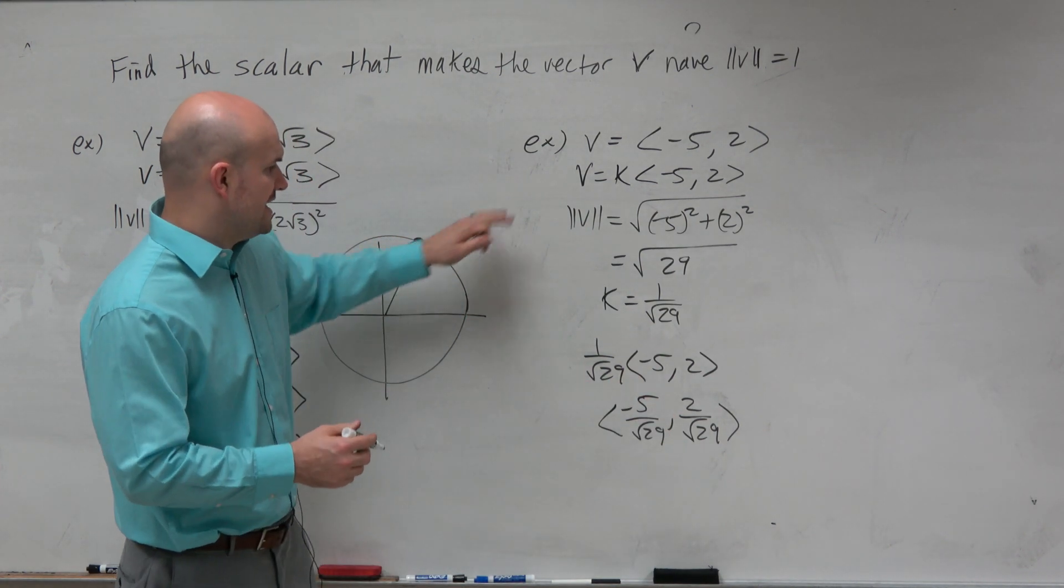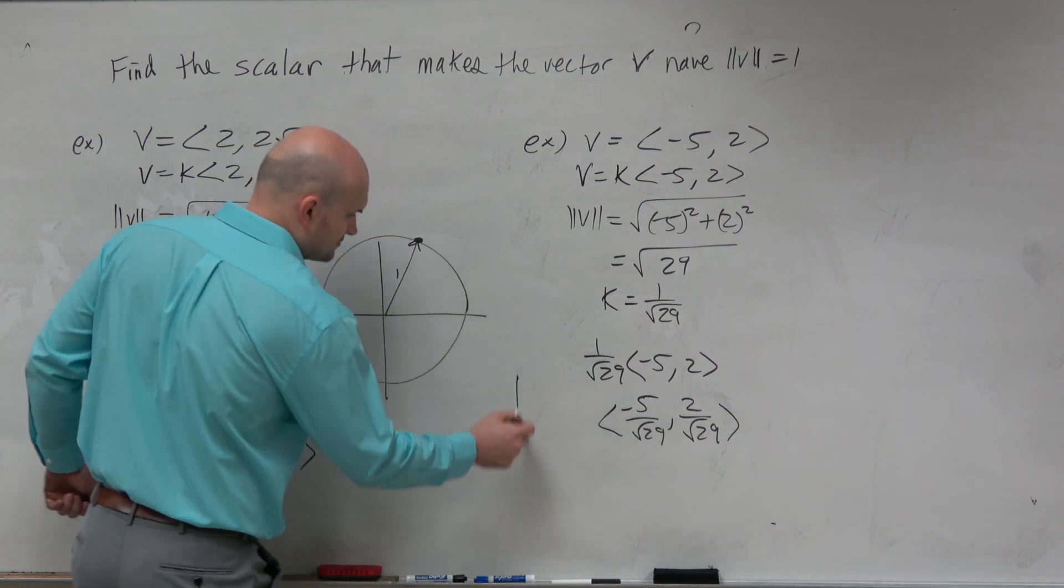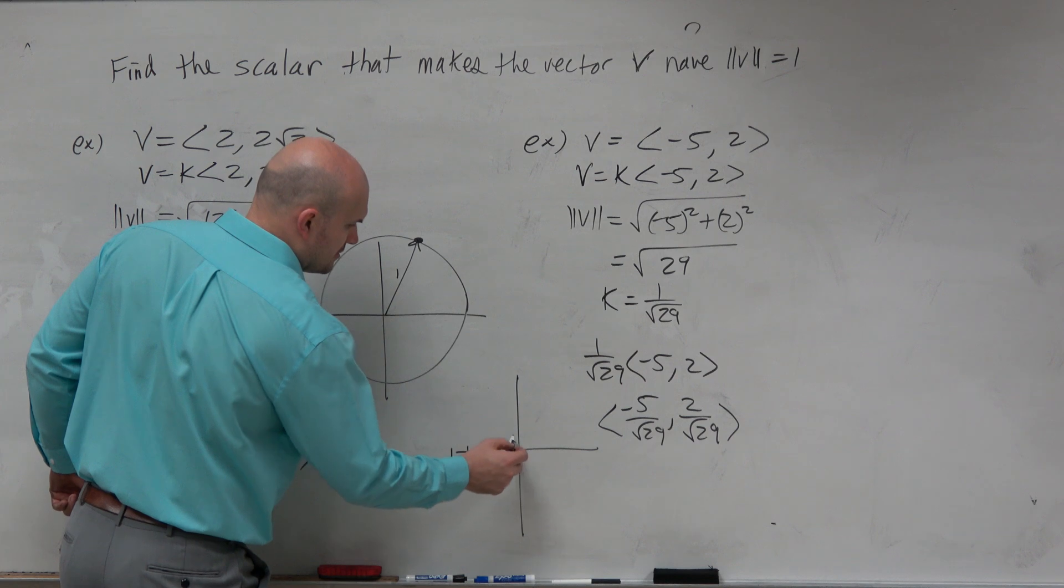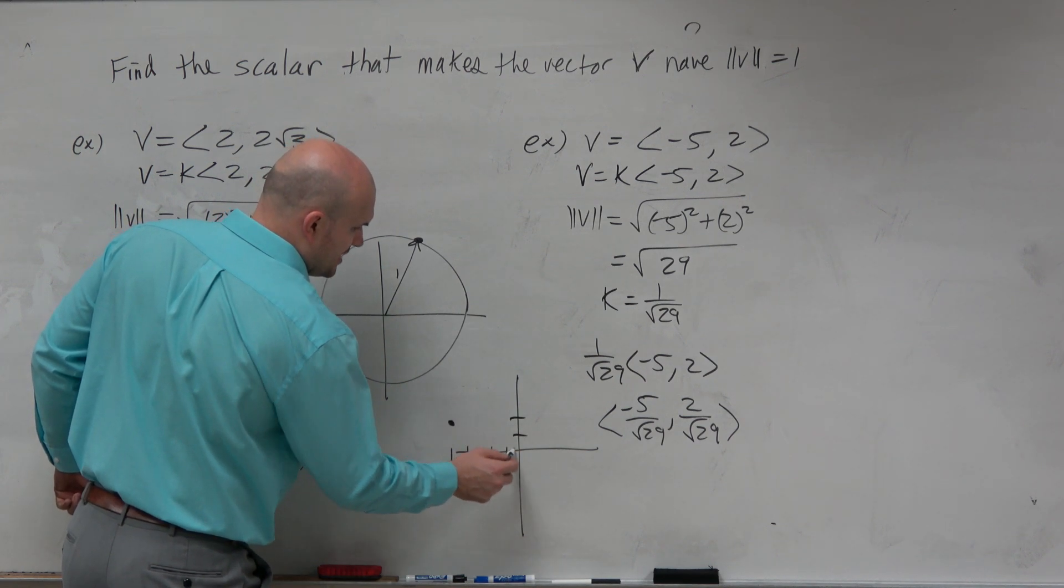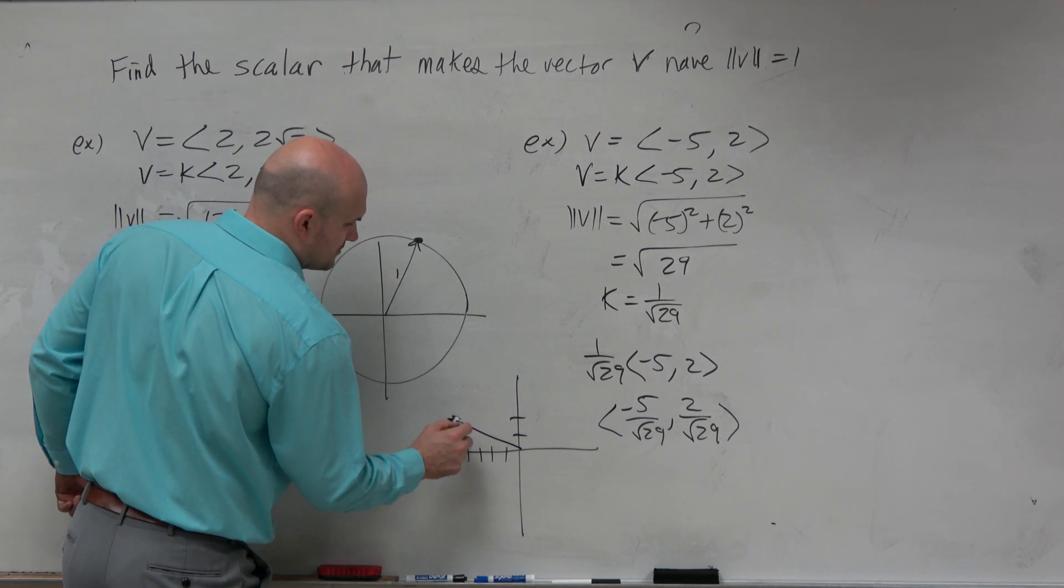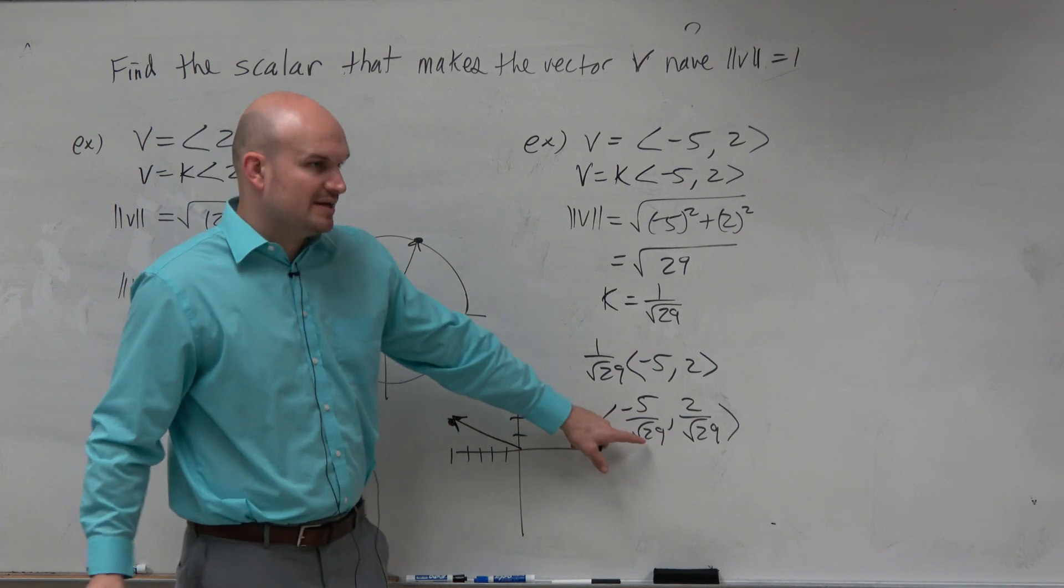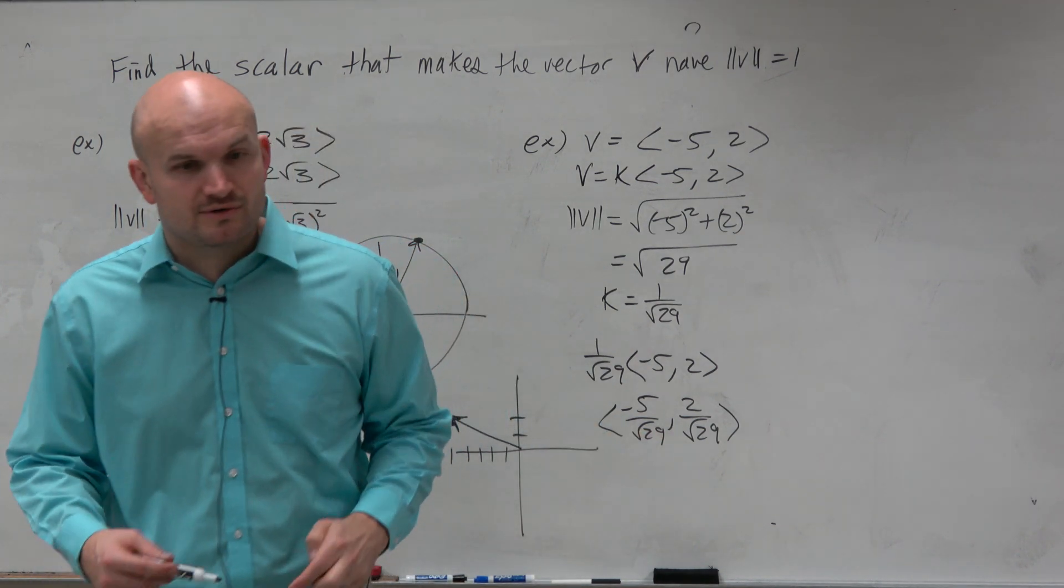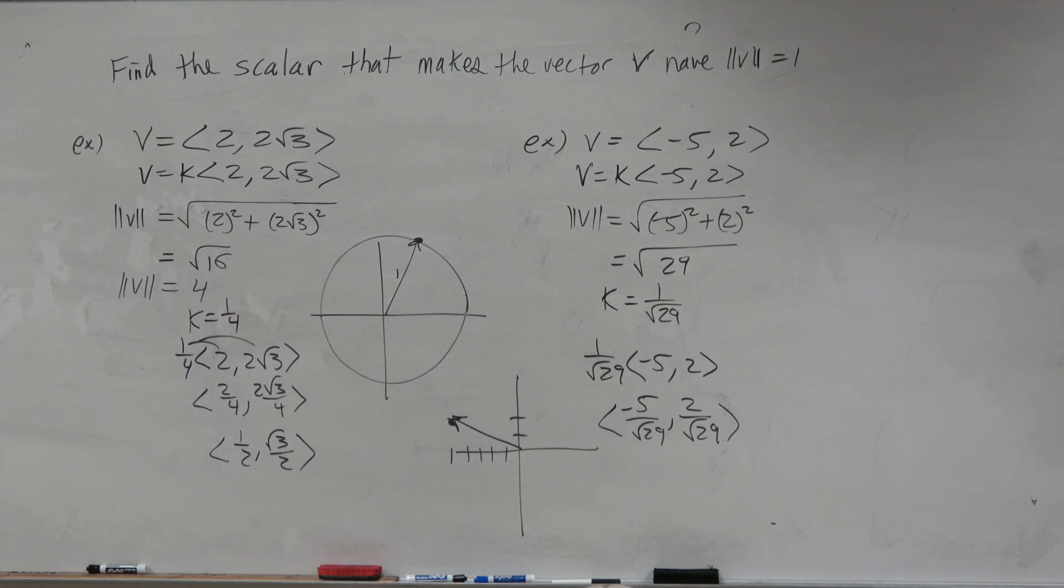But let's look at where this is. Negative 5, 2. That's over there, right? So if you divide by the square root of 29, you'd get that point. But we're not familiar with that on the unit circle. So we're going to deal with that in just a second, as far as what to do from there. But either way, to at least find this...